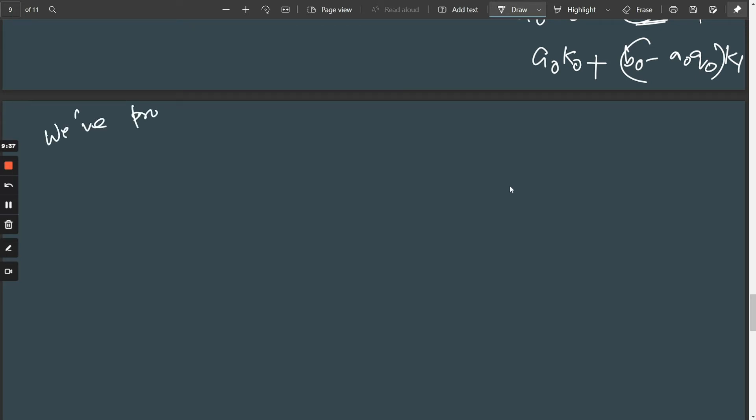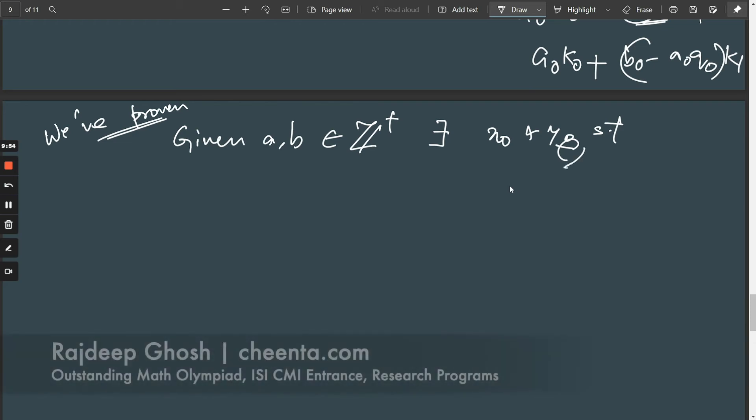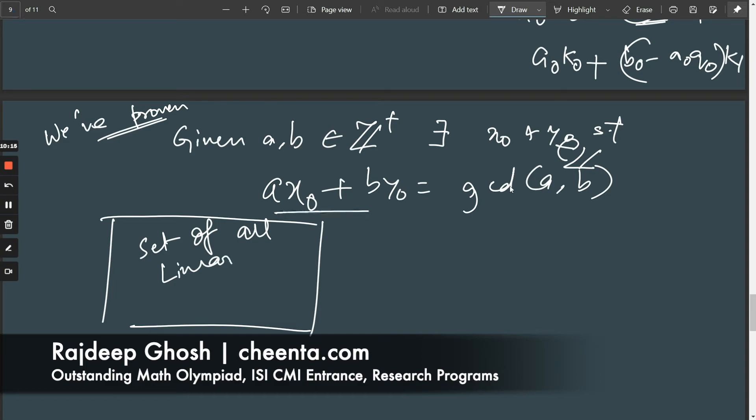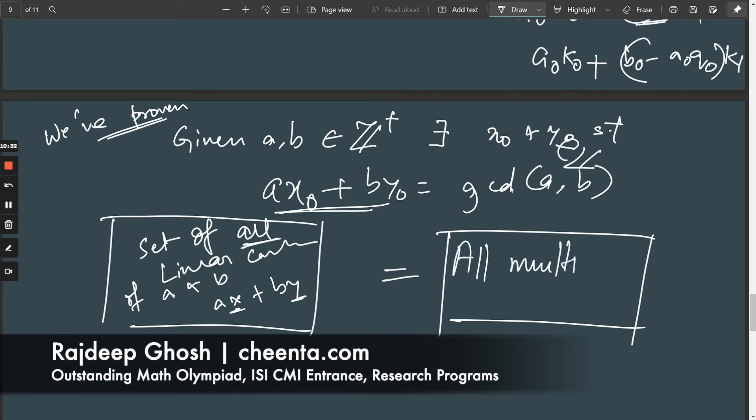We've proven, given a and b, I'm just rewriting these elements of Z. We never actually used that they were positive integers, but this is just convention. There exists x0 and y0 such that, an element of Z, a·x0 + b·y0 is equal to the gcd. This is helpful. So what this says is the set of all linear combinations. By linear combination, we just mean elements of this type, linear combinations of a and b. So ax + by, as x and y range freely over the integers, is actually equal to all multiples of gcd(a,b).